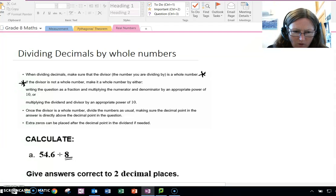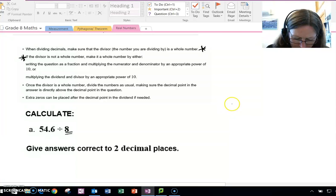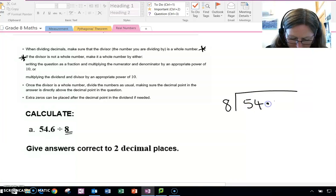Once it's a whole number, divide the numbers as usual, making sure the decimal point in the answer is directly above the decimal point in the question. So we say, how many times does 8 go into 54.6?